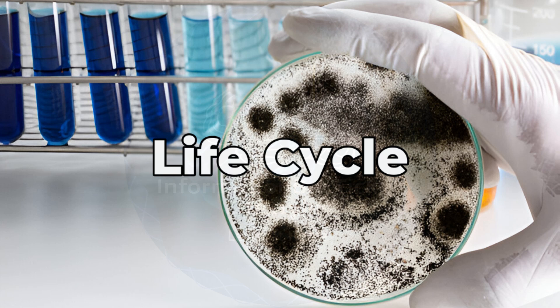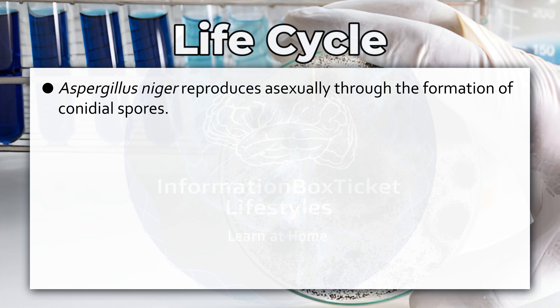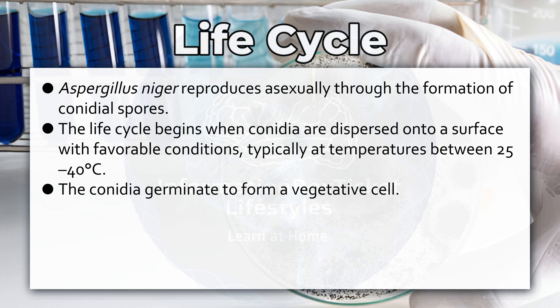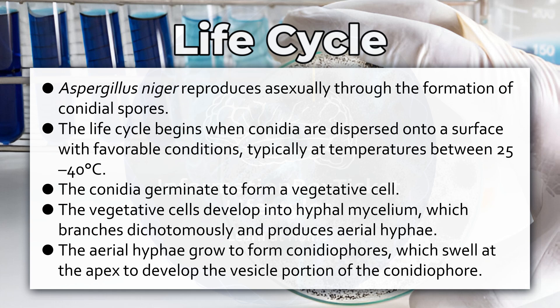Life Cycle of Aspergillus niger. Aspergillus niger reproduces asexually through the formation of conidial spores. The life cycle begins when conidia are dispersed onto a surface with favorable conditions, typically at temperatures between 25 to 40 degrees Celsius, and germinate to form a vegetative cell. The vegetative cells develop into high-growth mycelium, which branches dichotomously and produces aerial hyphae that grow to form conidiophores, swelling at the apex to develop the vesicle portion.